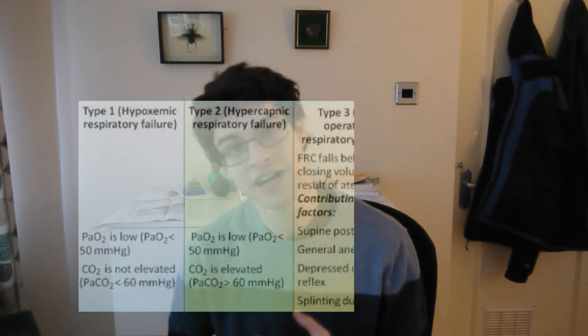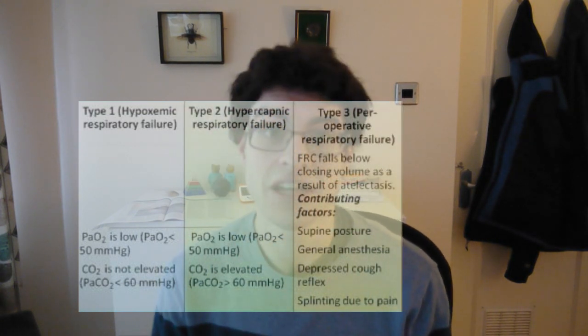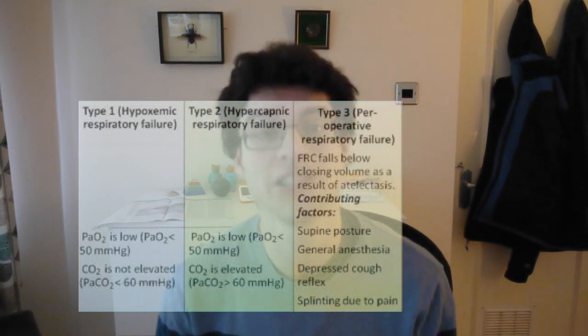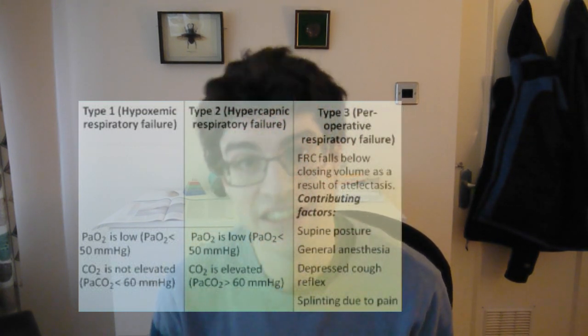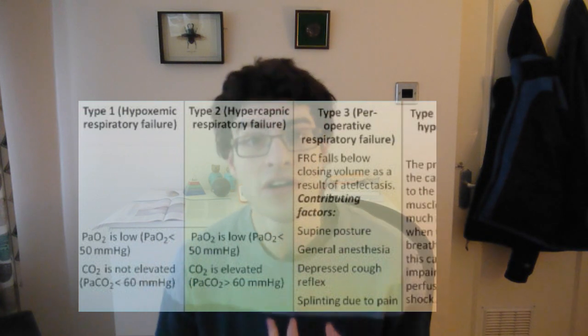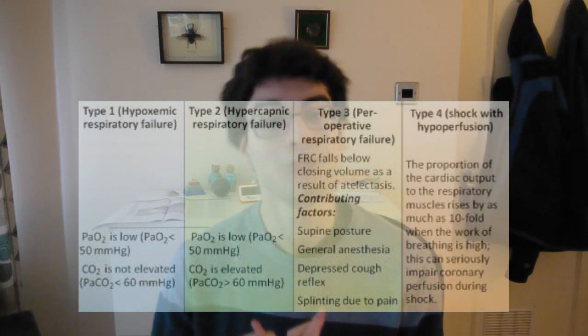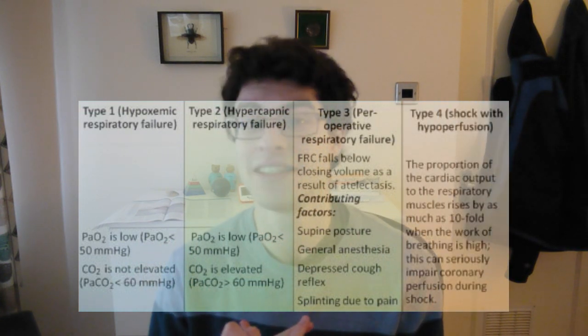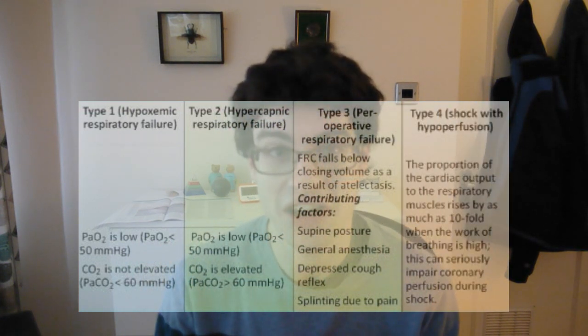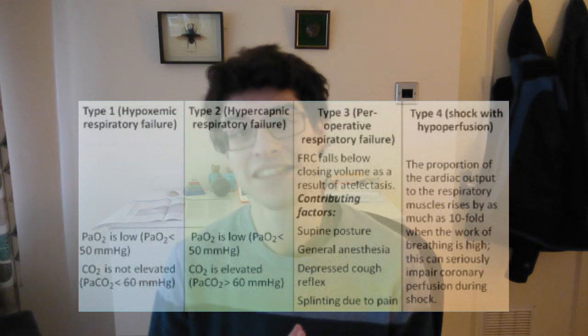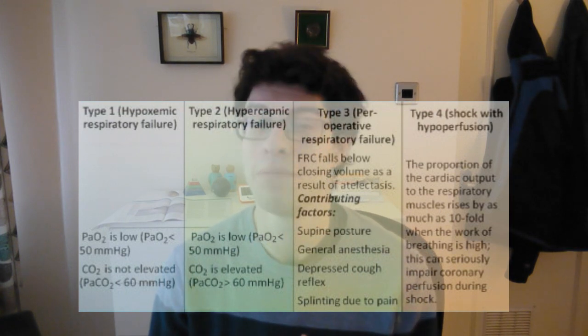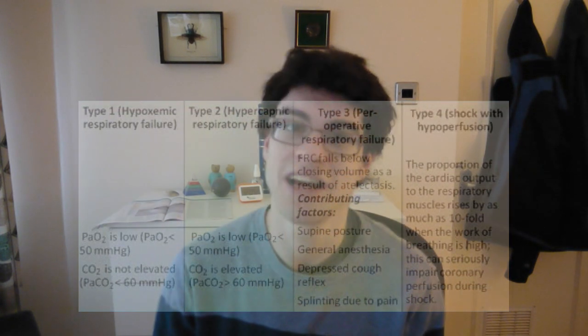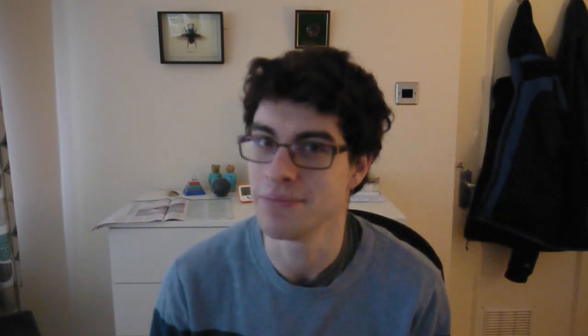Type 3 is basically another name for post-operative atelectasis, and type 4 is when you've got decreased perfusion of the lungs due to shock. Types 3 and 4 are basically versions of type 1 respiratory failure. The way you measure these blood gases is through an arterial blood gas.